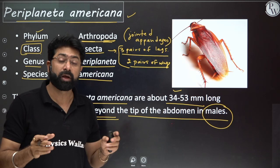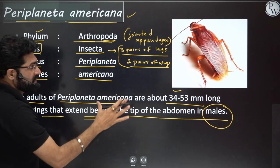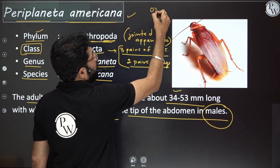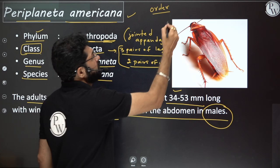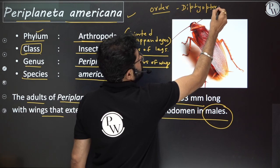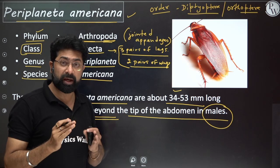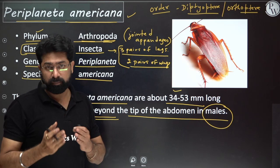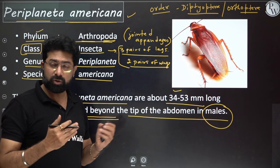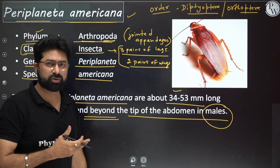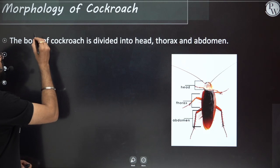The genus is Periplaneta and the species is americana. The order of Periplaneta americana — usually not asked but you should know — is Dictyoptera or Orthoptera. It is grouped under these because it has two pairs of unequal wings: one mesothoracic and one metathoracic, and only the metathoracic wings help in flight.